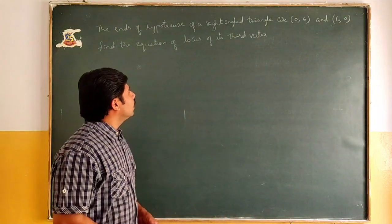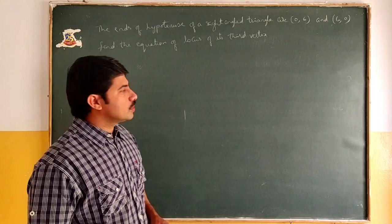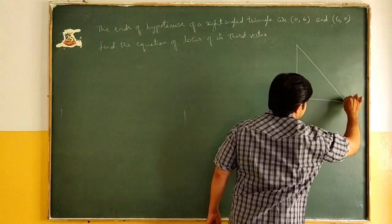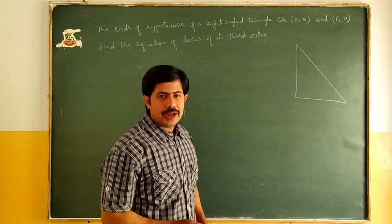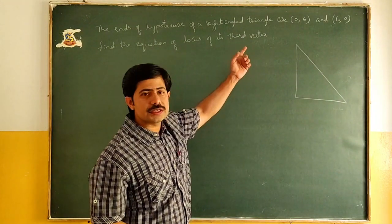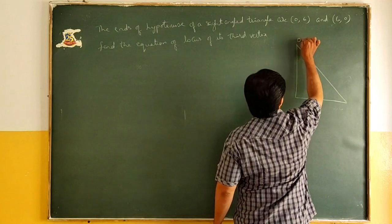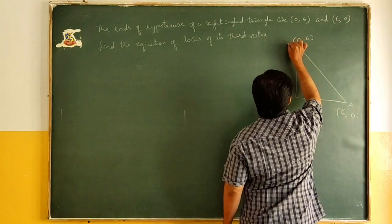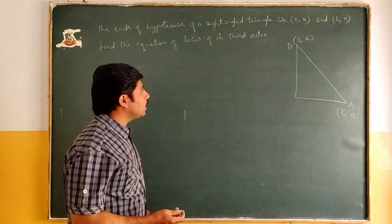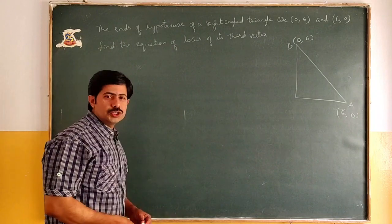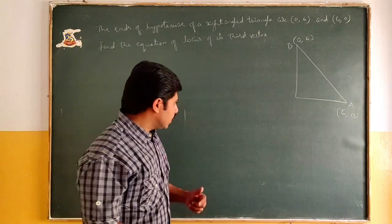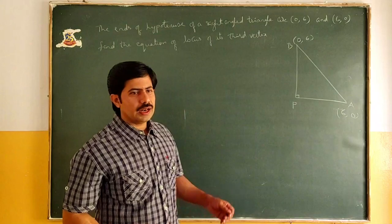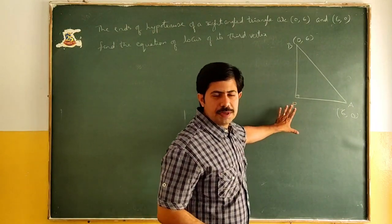Here, hypotenuse of a right angle triangle is given. So first what we do, we draw a right angle triangle. The ends of the hypotenuse are (0,6) and (6,0). This is A and this is B. Right angle at P.